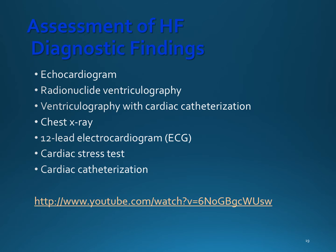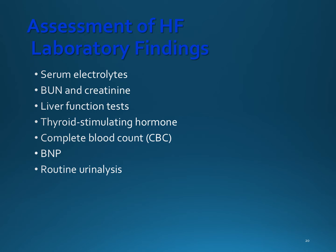Chest x-ray and EKG are also obtained to assist in the diagnosis. Cardiac stress testing and cardiac catheterization may be performed to determine whether coronary artery disease and cardiac ischemia are causing the heart failure. The lab studies usually performed during the initial workup include electrolytes, BUN and creatinine, liver function tests, thyroid stimulating hormone, a CBC, and a routine UA. The BNP level is a key diagnostic indicator for heart failure — high levels are a sign of high cardiac filling pressure and can aid in both the diagnosis and management of heart failure. The results of all of these laboratory studies assist in determining the underlying cause and can be used to establish a baseline to assess effects of treatment.